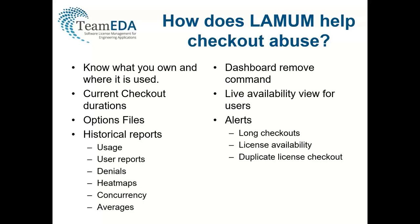We can start looking at current checkout duration, giving a complete live picture of who's using what and how long they've had it open. I'll talk about options files shortly as that's a key aspect. We also have a full suite of historical reports that you often can't get from in-house license management stat tools. We have a remove capability that allows us to recycle and revoke licenses, a live view for all users of who is consuming hotly contested license modules — enabling self-administration — along with alerts including long checkout alerts, license availability alerts, and duplicate license checkout alerts.